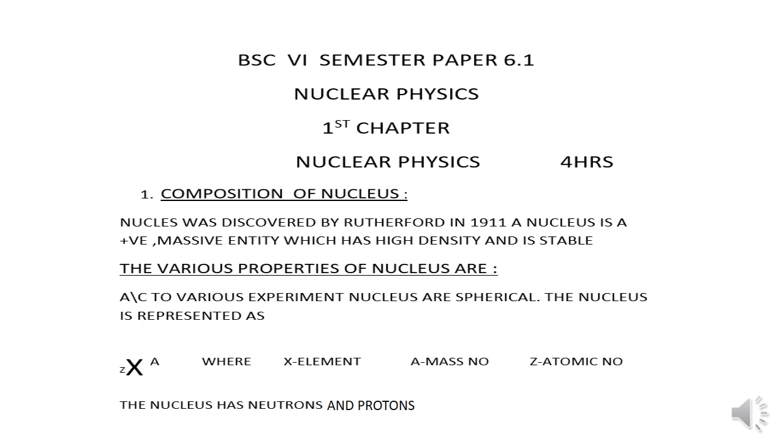The nucleus is represented by a symbol X with superscript A and subscript Z, where X is the nucleus of the atom of the element, A is its mass number and Z is atomic number. The nucleus has in itself neutrons and protons.